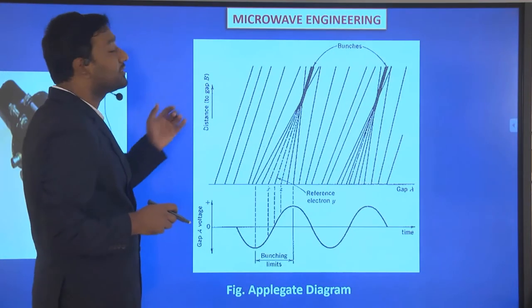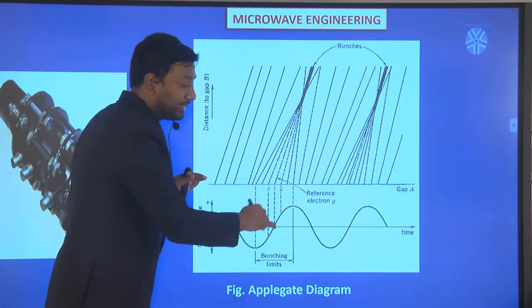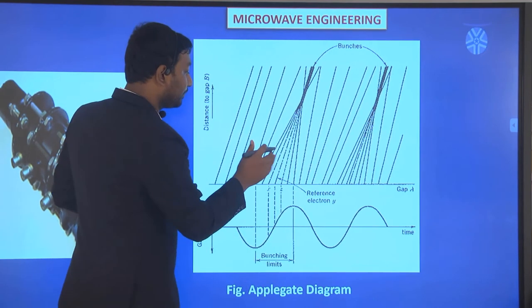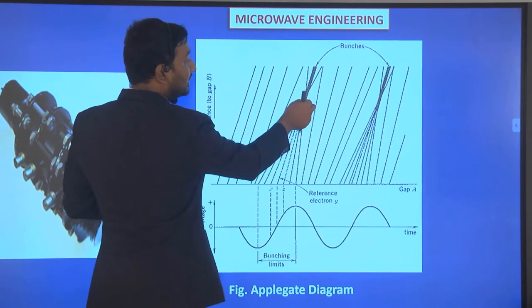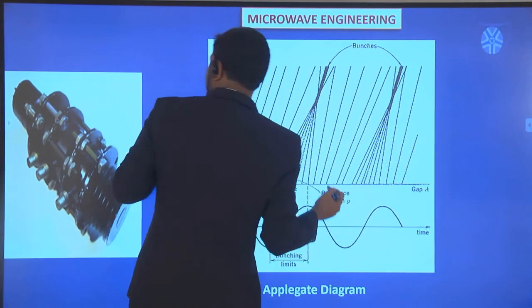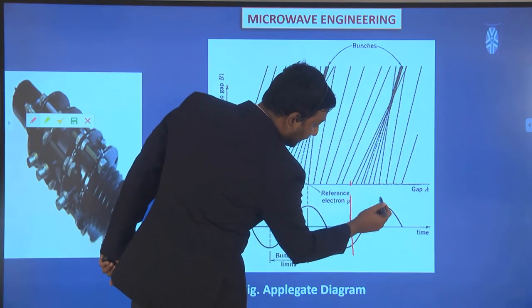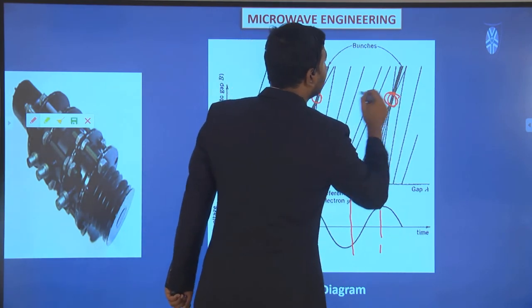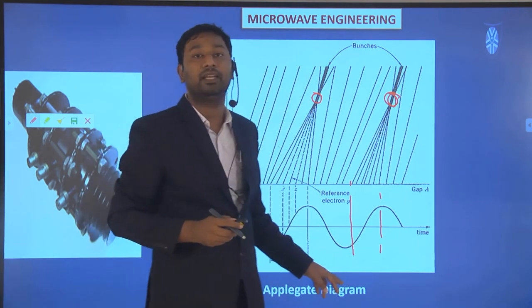All electrons will reach that particular point. Similarly, the pattern repeats: there are bunched electrons in one particular range forming a bunch, and in another range another bunch forms. That diagram is called the applicate diagram.